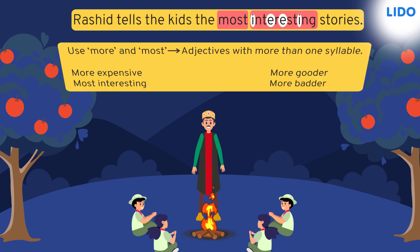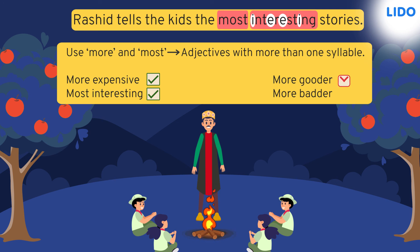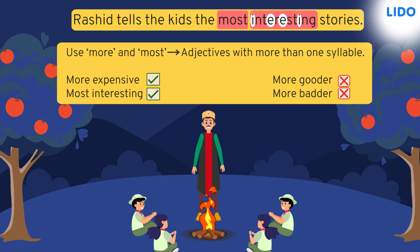So remember, whenever there are adjectives with more than one syllable, we use 'more' or 'most'. We don't use 'more' or 'most' with other adjectives — we don't say 'more gooder' or 'more badder'. Now that's all the rules. Let's leave Rashid entertaining the kids with his most amusing stories. See you.